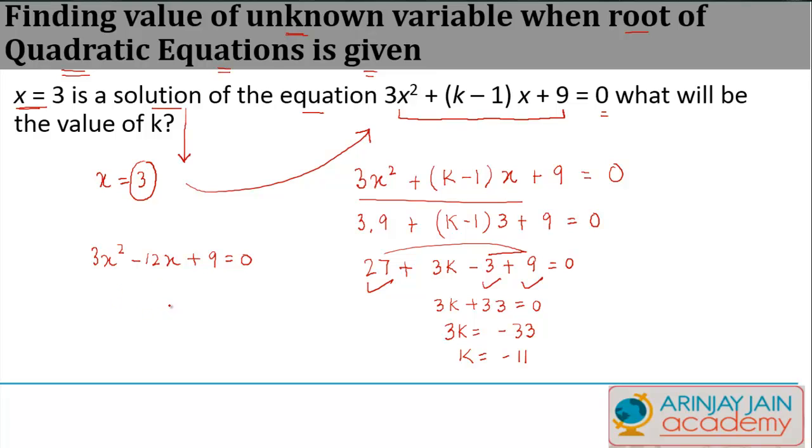Do you want to check whether this holds true for x = 3 or not? x = 3 means 9 times 3 gives you 27, minus 12 times 3 gives you -36, plus 9. If you see, the sum total of this is equal to 0, which is the right-hand side.